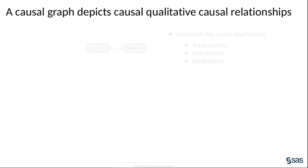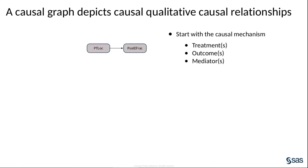As mentioned previously, a DAG represents qualitative causal relationships. To create a DAG, one useful approach is to begin with the causal mechanism that you want to study. This includes the treatment variable, the outcome variable, and any mediating variables. In this example, there is no mediator, so the causal mechanism consists of a treatment variable and an outcome variable joined together by a direct causal link.